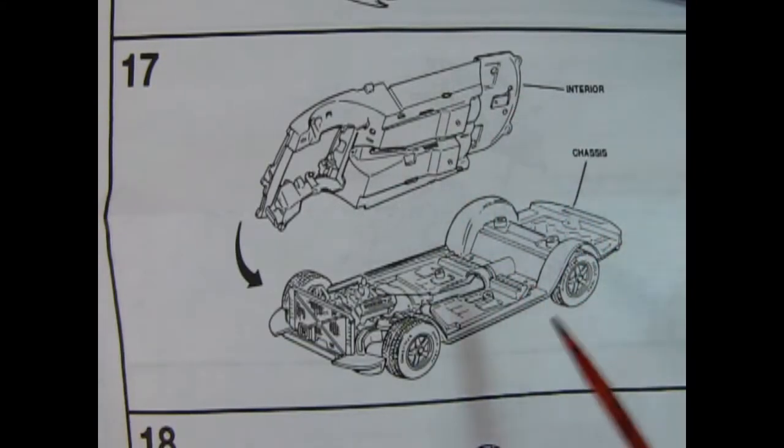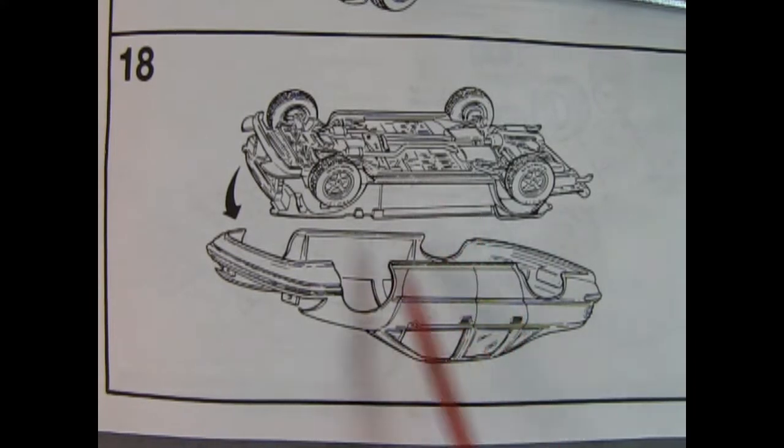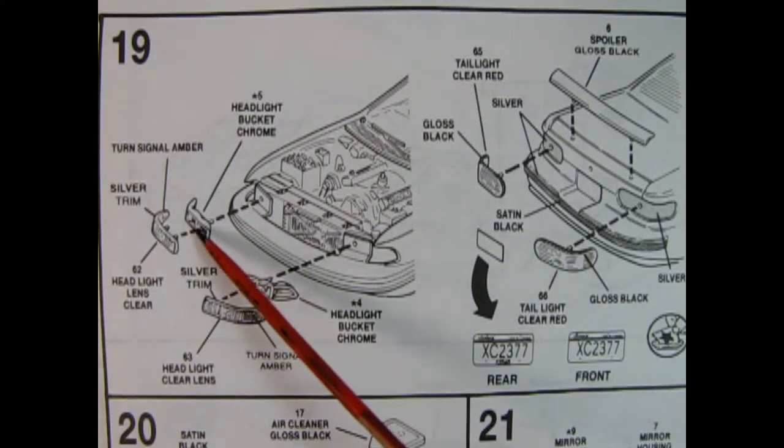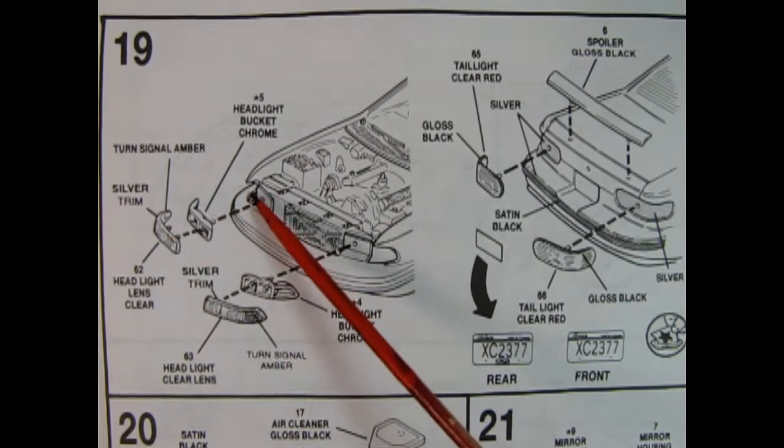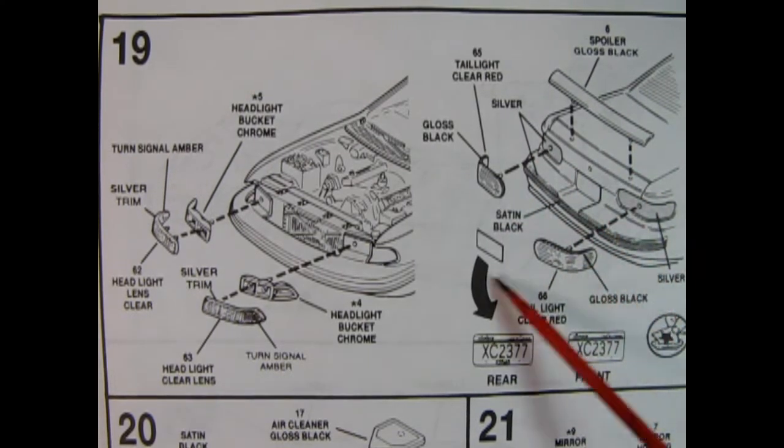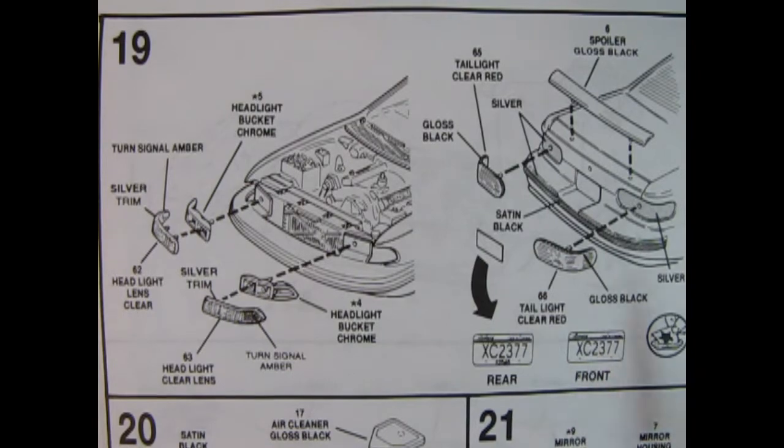Panel 17 is showing our interior being dropped onto the chassis. So again, very simple. And here we have the chassis and interior being dropped into the body shell. Panel 19 shows our front headlight bezels, as well as the turn signal lenses being glued into place in the front. And it has some paint call outs for turn signal amber and whatnot. Then in the back, we have a spoiler up here, as well as our turn signals in red. And then you've got your license plates. So you've got one for the rear, which has the little sticker on there, and the one for the front that does not.